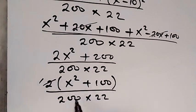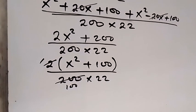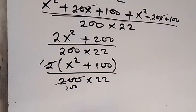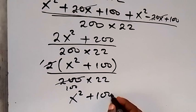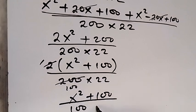Then divided by 200 times 22. And we can cancel 2 here with 1, then 2 here, that's remaining 100. Then when we write what is left, that will give us x squared plus 100 divided by 100 times 22.